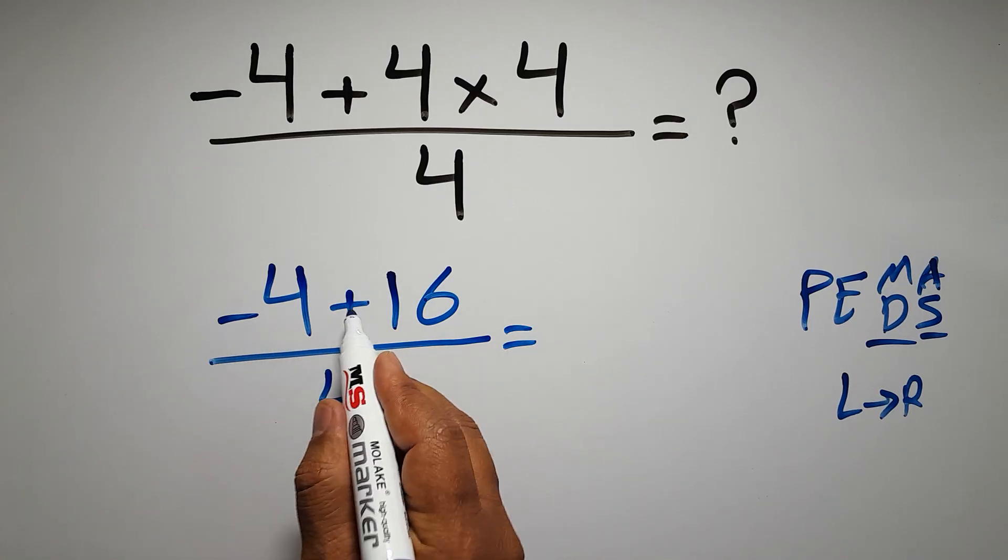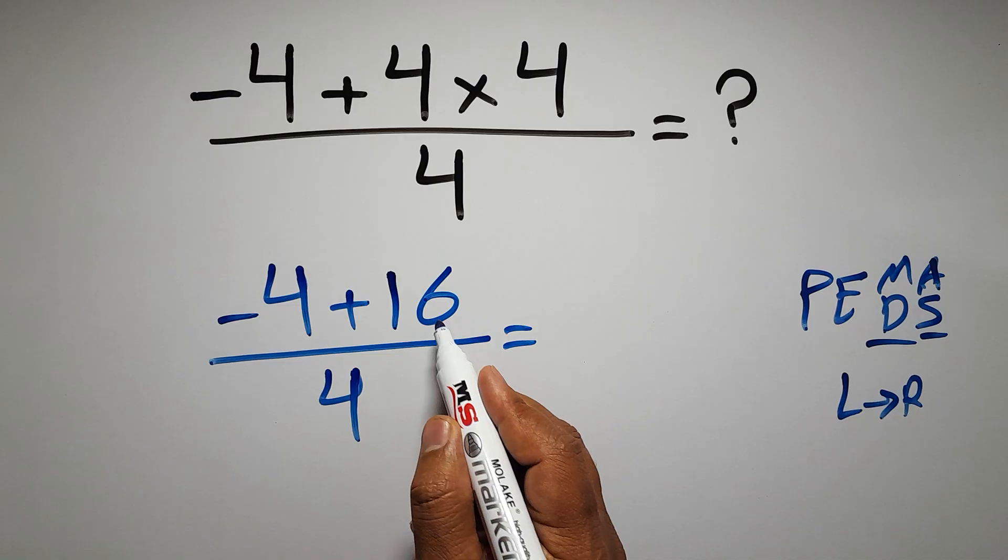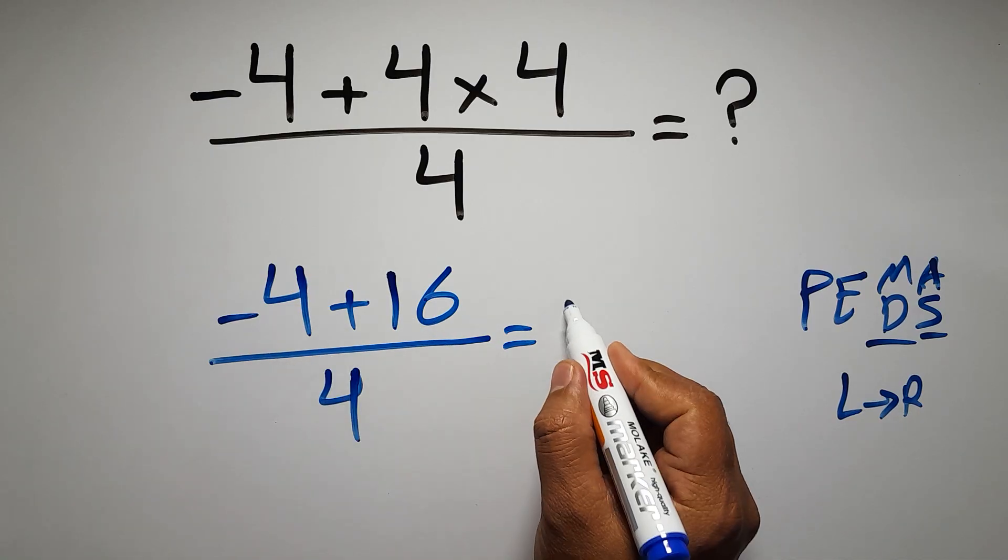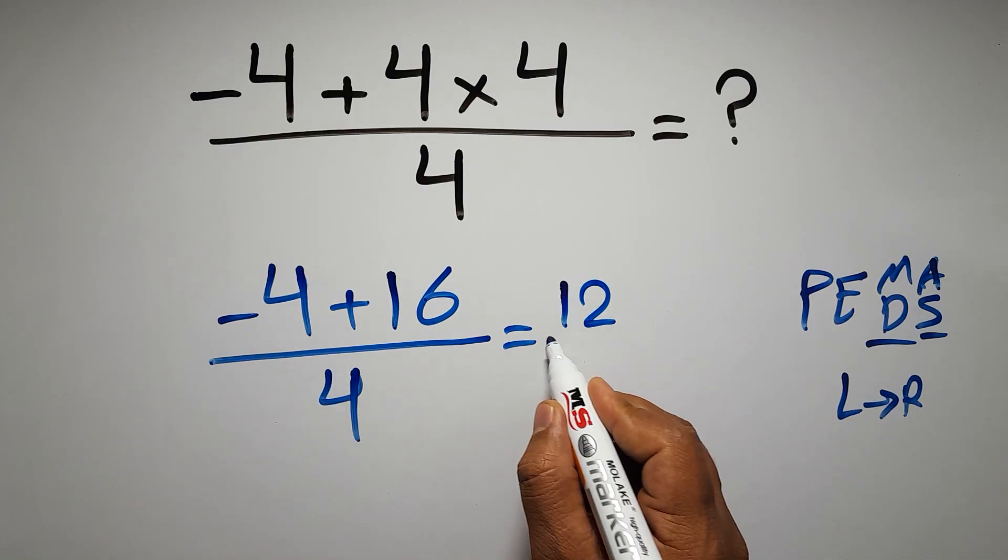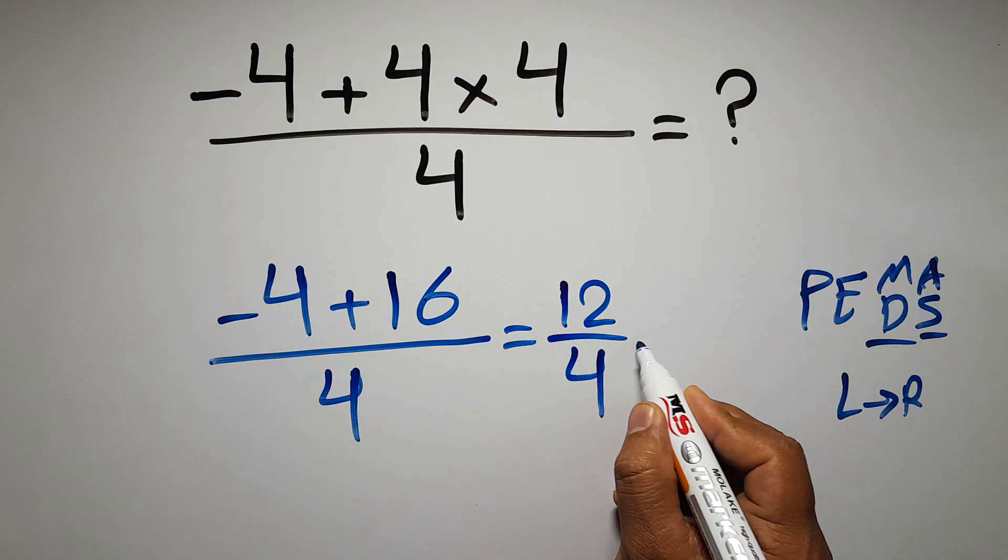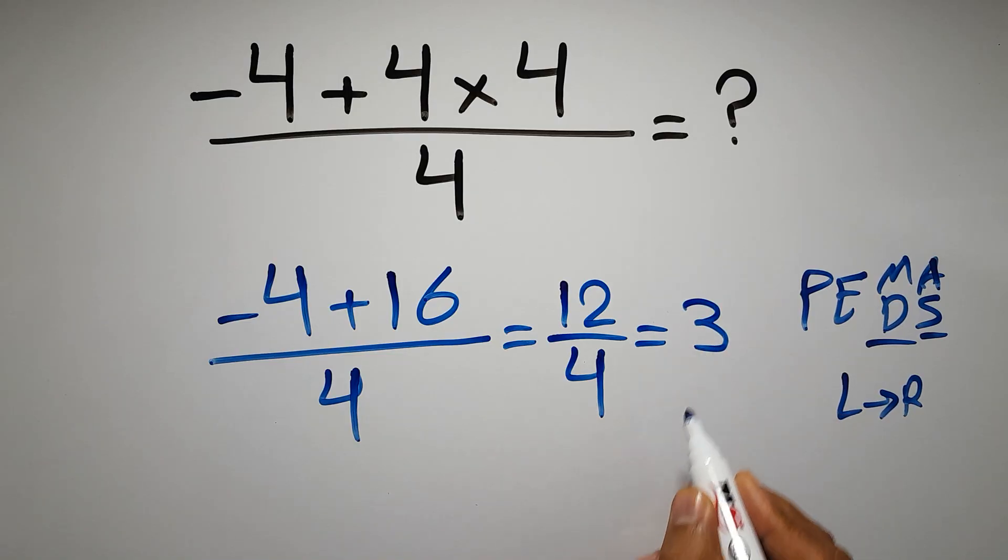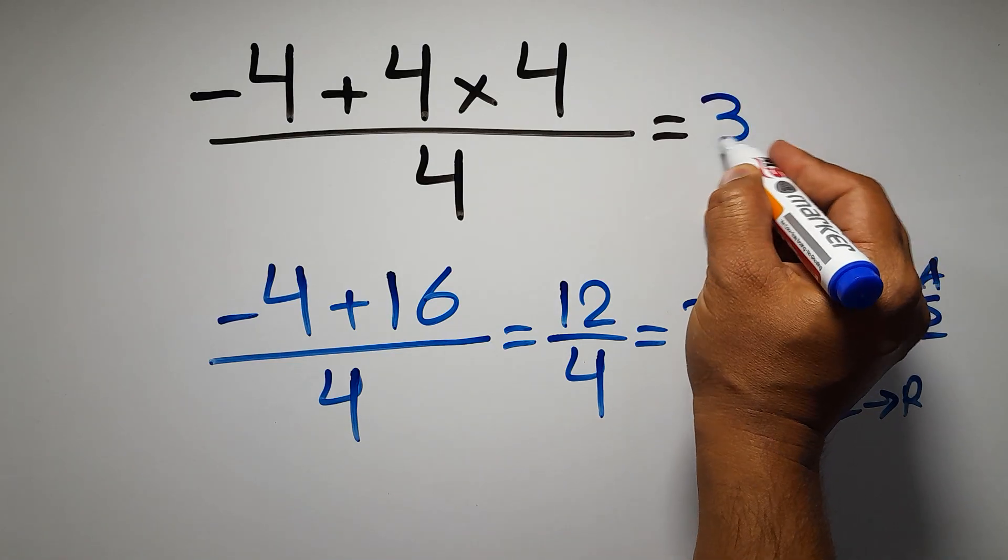Negative 4 plus 16 is the same as 16 minus 4, which equals 12. So 12 over 4, which equals 3. And this is our final answer to this problem. The correct answer is 3.